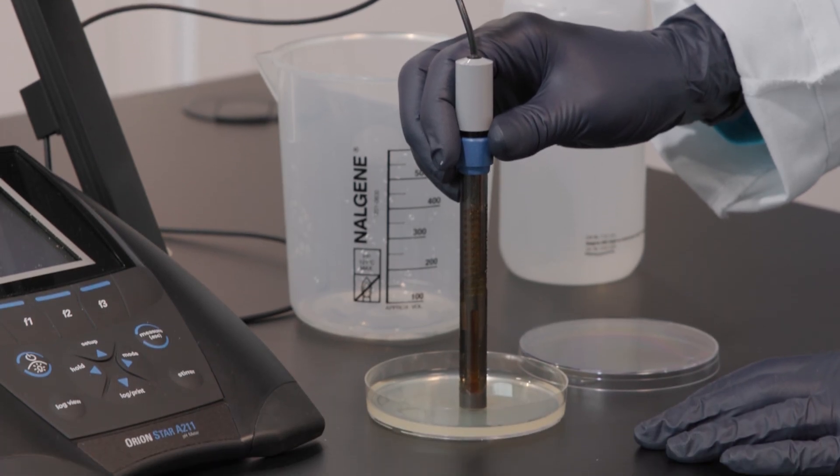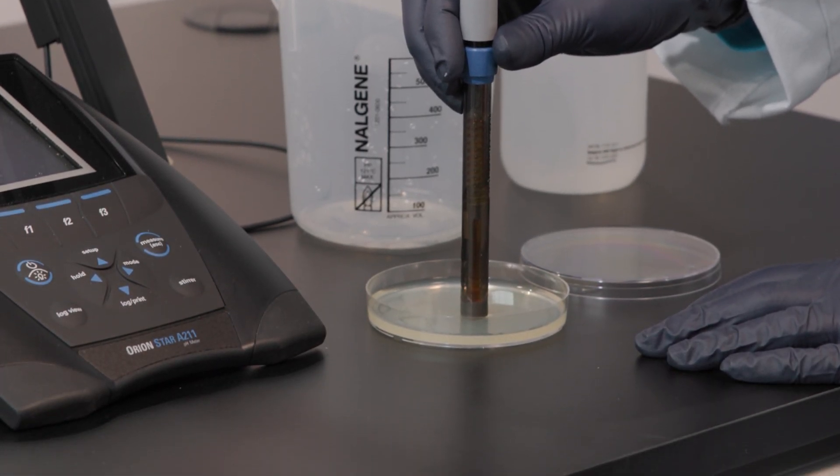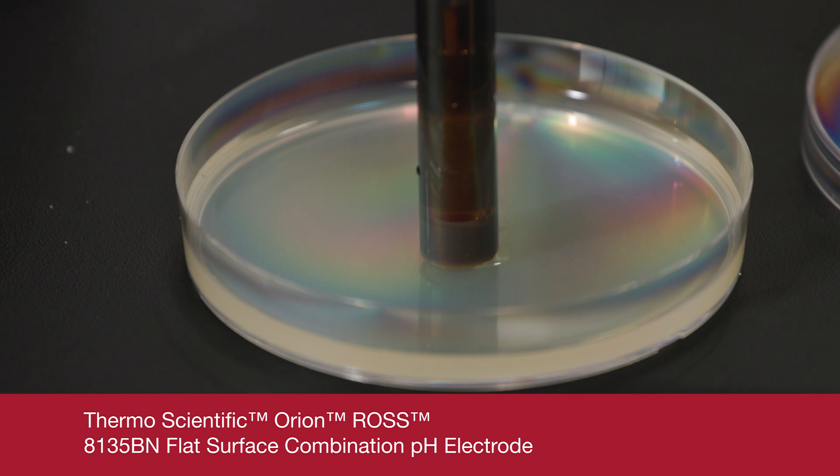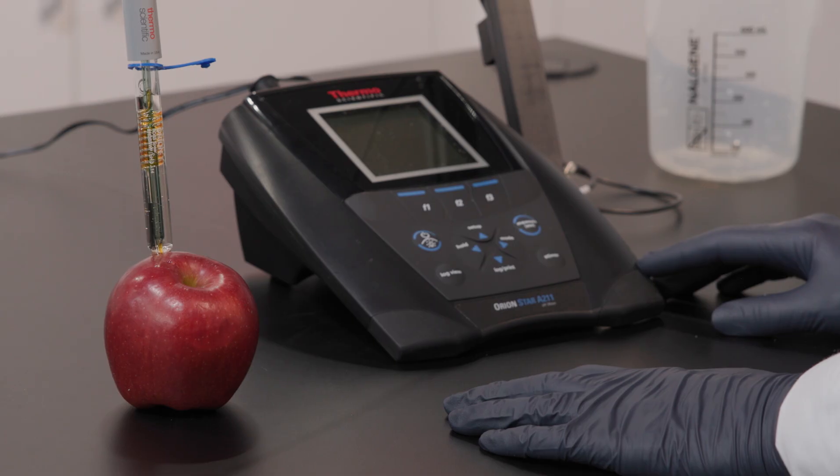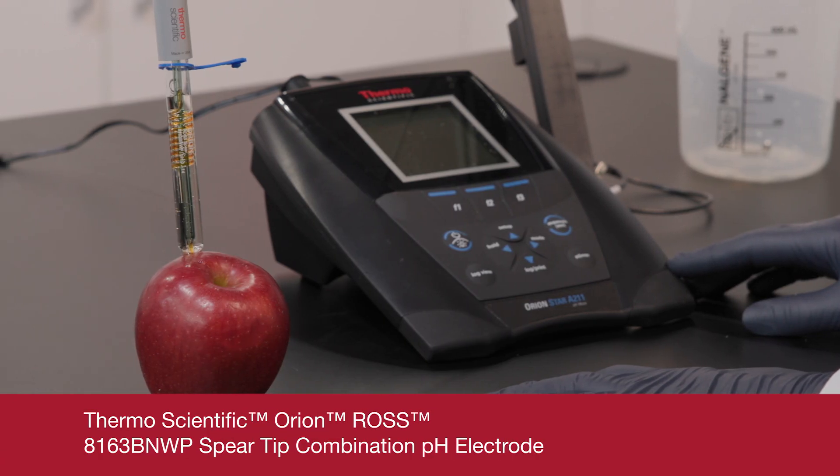For surface pH measurements conducted on paper, foods, or even agar plates, special pH electrodes with flat sensing bulbs can be used. For measurements that require some level of sample penetration, spear-tipped electrodes are available.